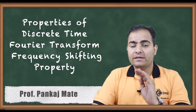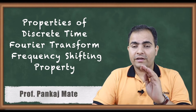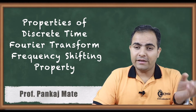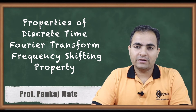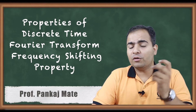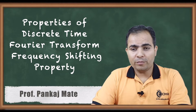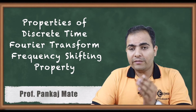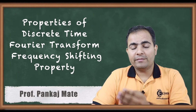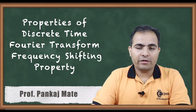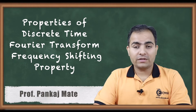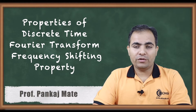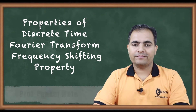Frequency shifting property means: if in the input we multiply any frequency — let's say omega naught — then at the output you can say that our output frequency is shifted by omega naught. So first of all we'll see the statement and then we'll move on to the proof.